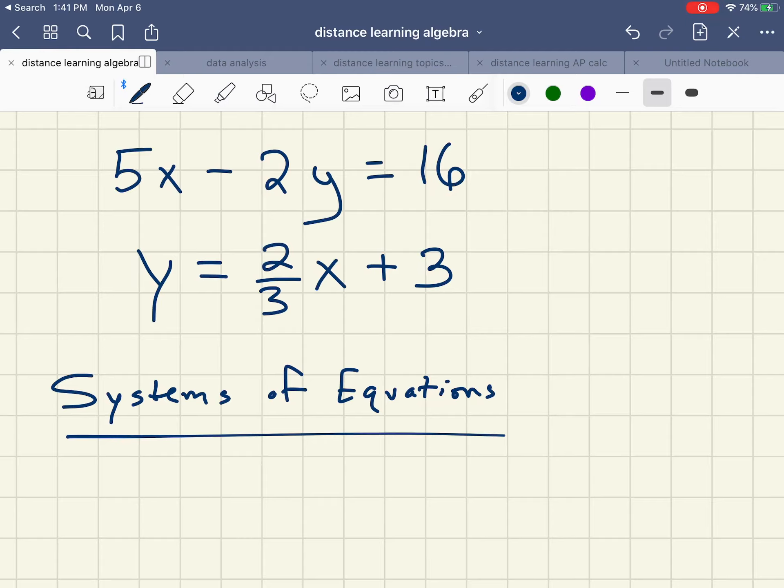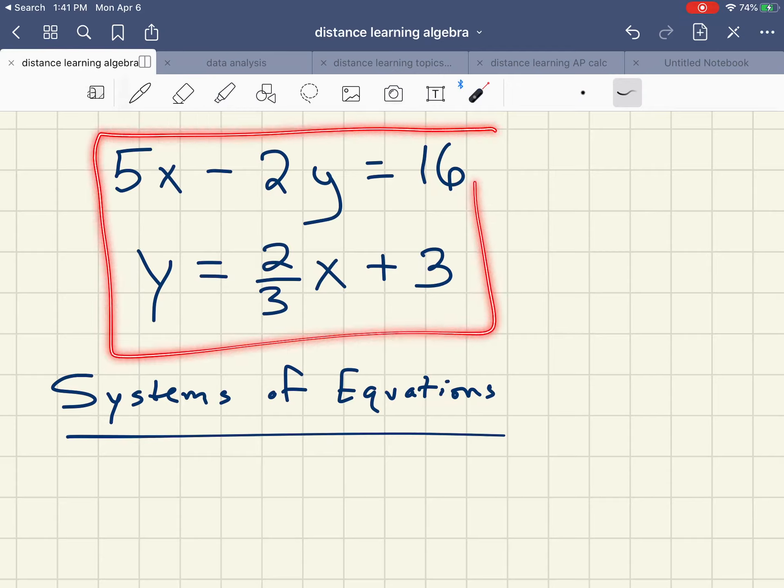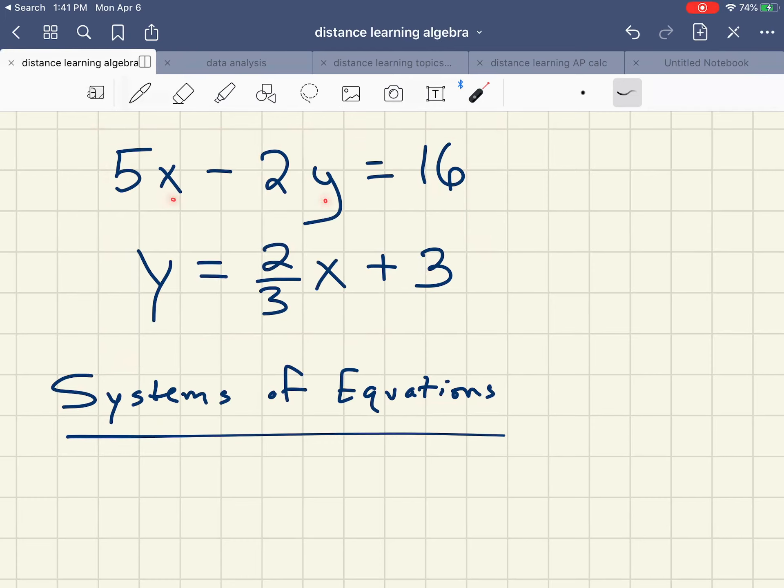This is a video on systems of equations, just going to go over some basics. First of all, what is a system of equations? In this case we have two equations, and in each equation we have two variables. In each equation they're the same variables. These particular equations, we have a linear equation in standard form and a linear equation in slope intercept form.